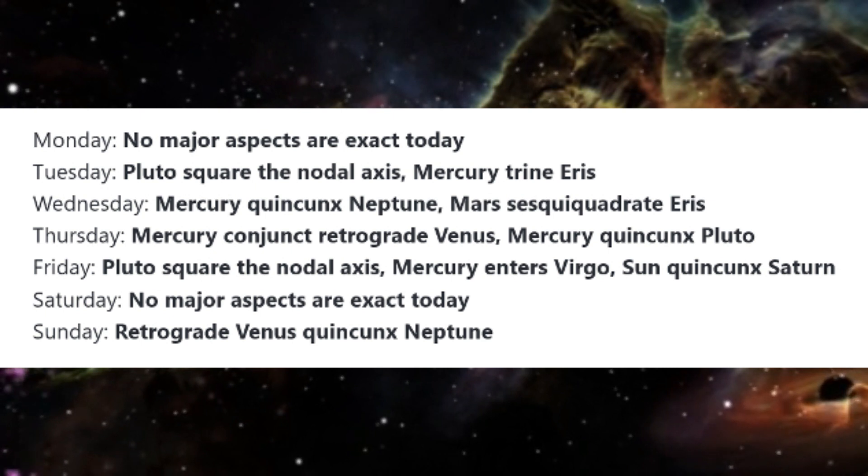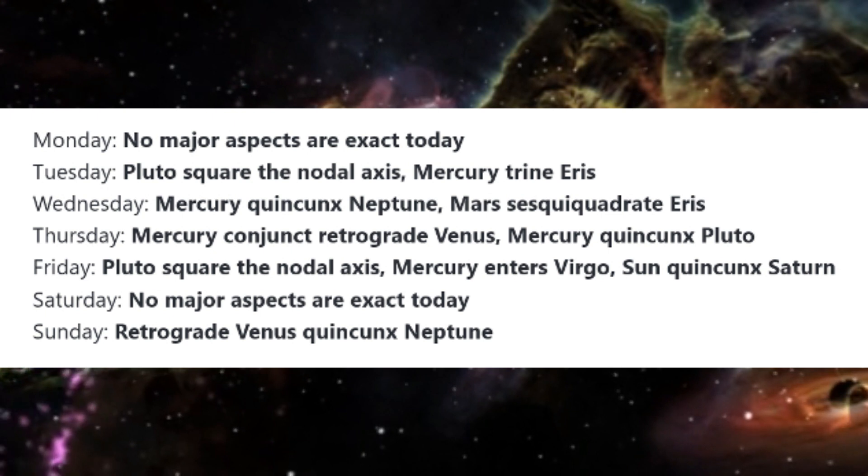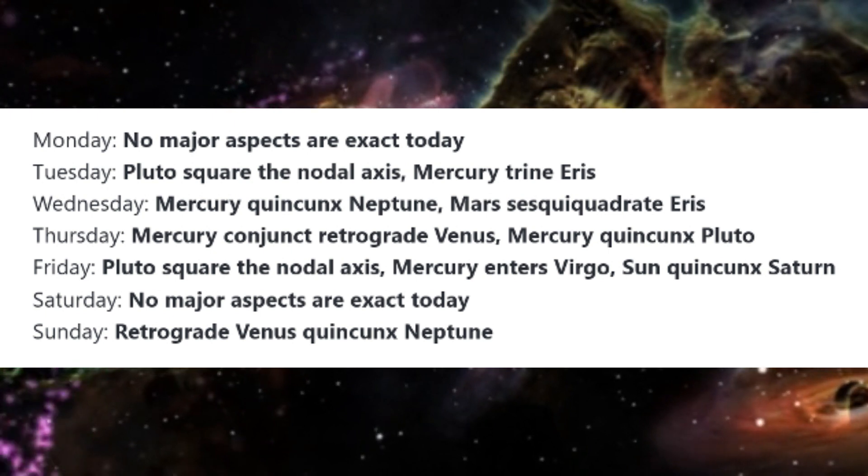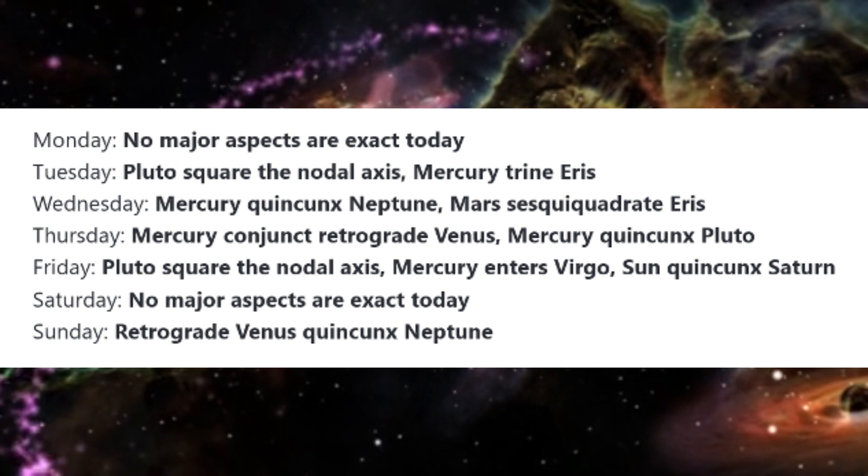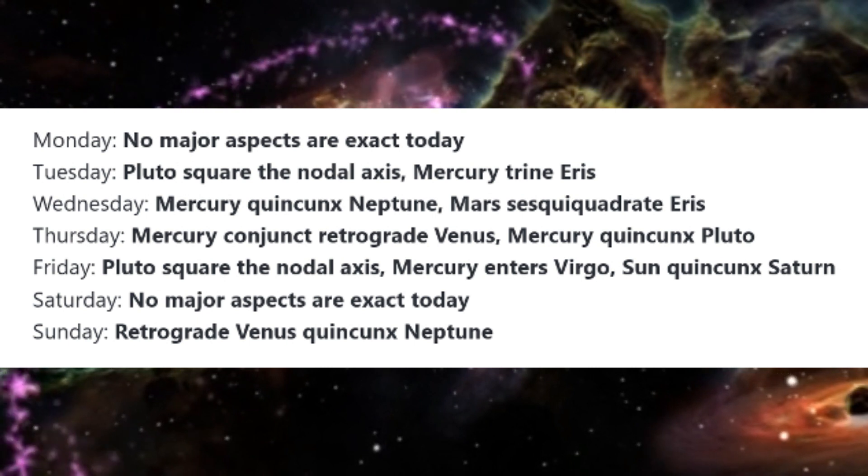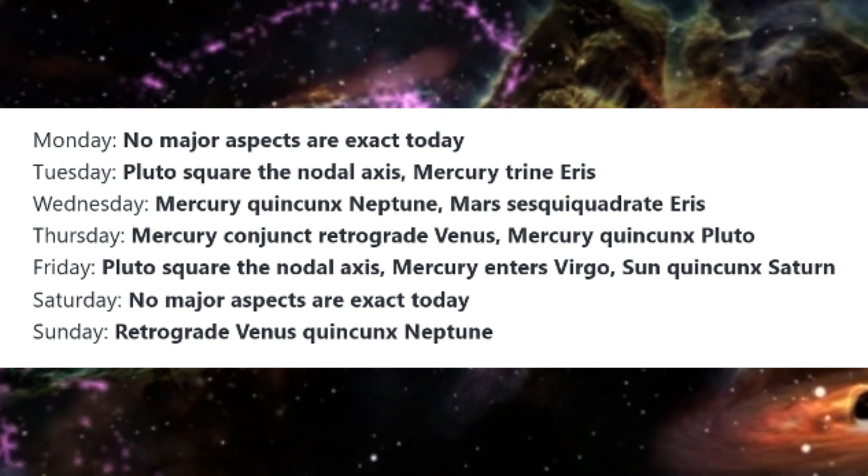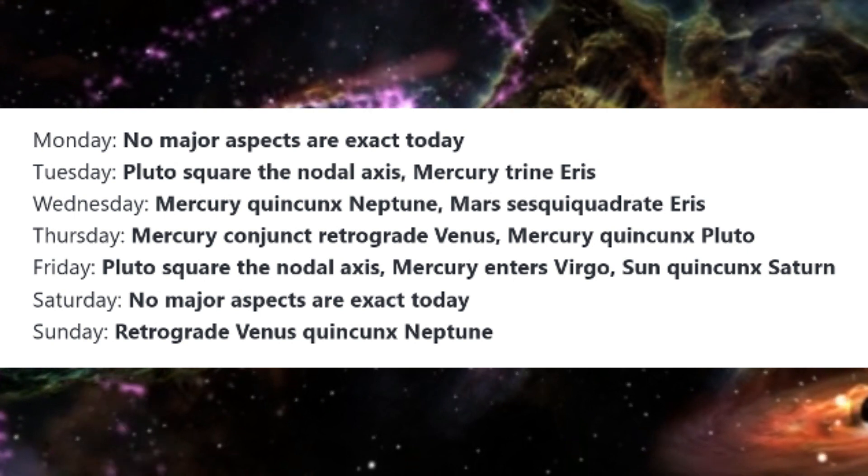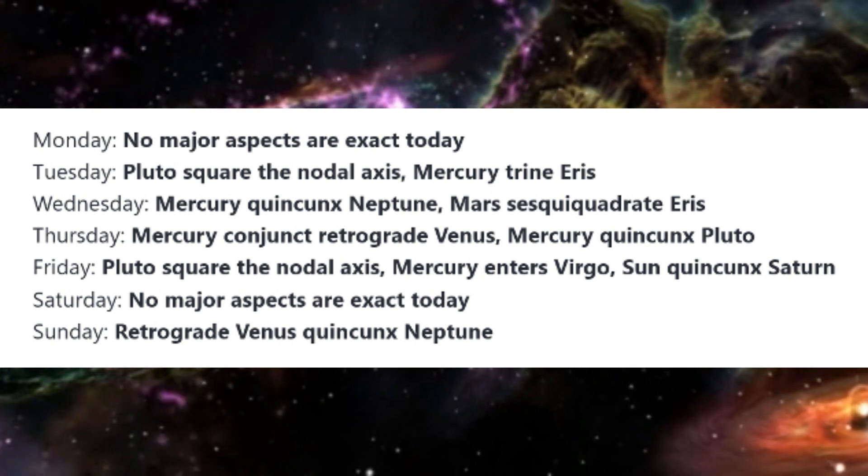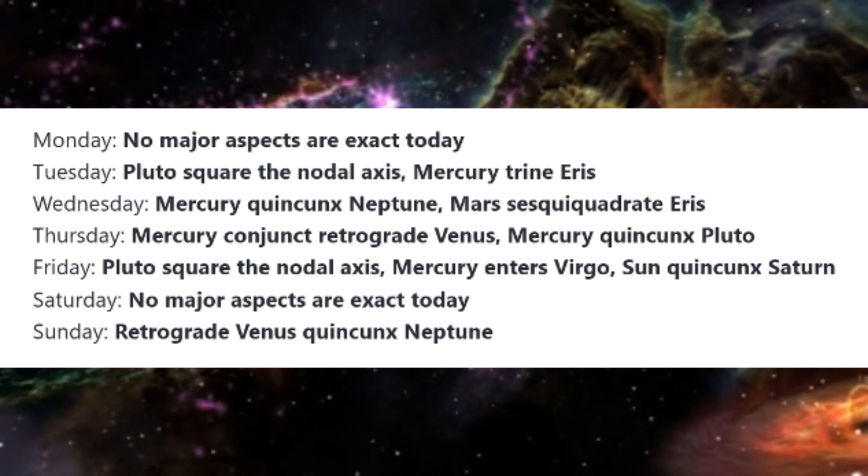On Thursday, Mercury is conjunct retrograde Venus. We may become involved in conversations about relationship issues today. It is possible that someone from our past will get in touch, or we might decide to contact someone we once knew and loved. Dreams may revolve around old relationship themes or the people we were involved with.